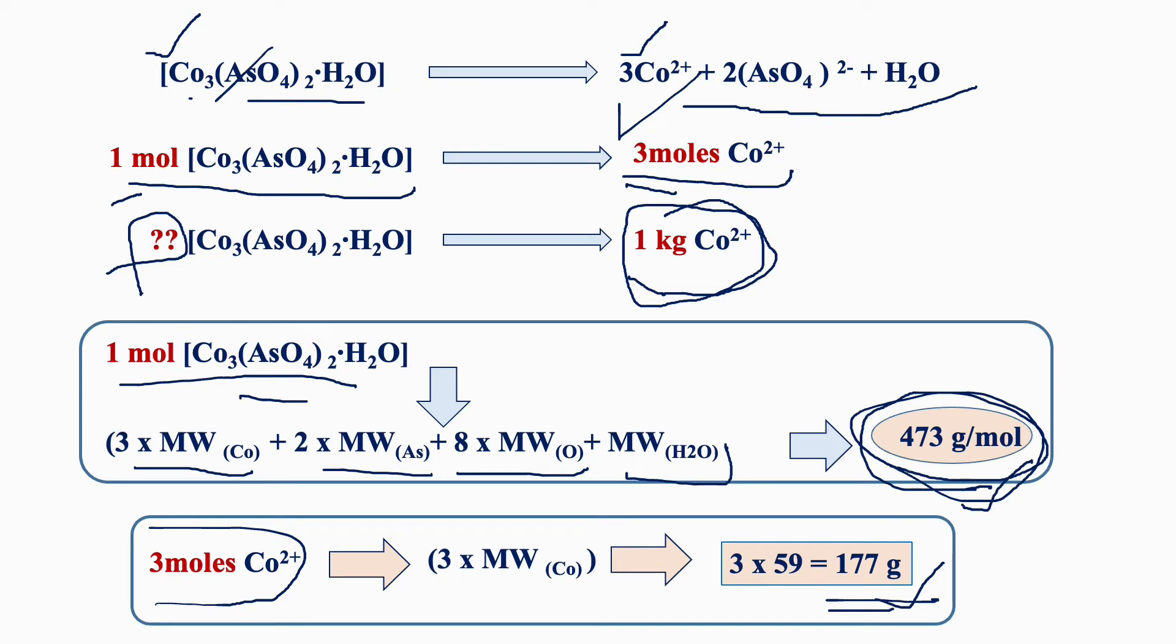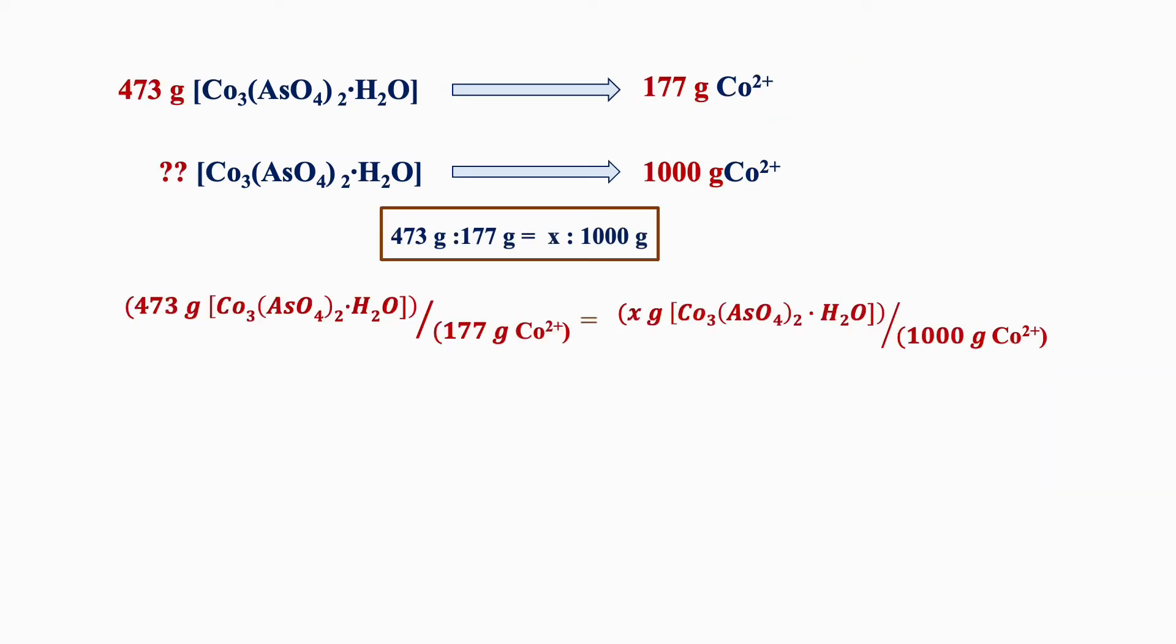The question is to find out how much ore is required to get 1 kg of cobalt, that is 1000 grams. So we can set it up this way: 473 grams is to 177 grams as unknown x is to 1000 grams.